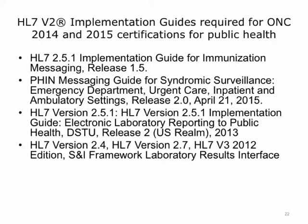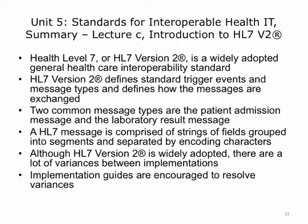Here are some HL7v2 implementation guides that are required for ONC 2014 and 2015 certifications for public health — examples include immunization messaging, syndromic surveillance, and laboratory reporting. This concludes Lecture C of Standards for Interoperable Health IT. To summarize: HL7v2 is a widely adopted general healthcare interoperability standard that defines standard trigger events and message types and specifies how messages are exchanged. Two common message types are the patient admission message and the laboratory result message. An HL7 message is comprised of strings of fields grouped into segments and separated by encoding characters. Although HL7v2 is widely adopted, there is significant variance between implementations, and implementation guides are encouraged to help resolve this.